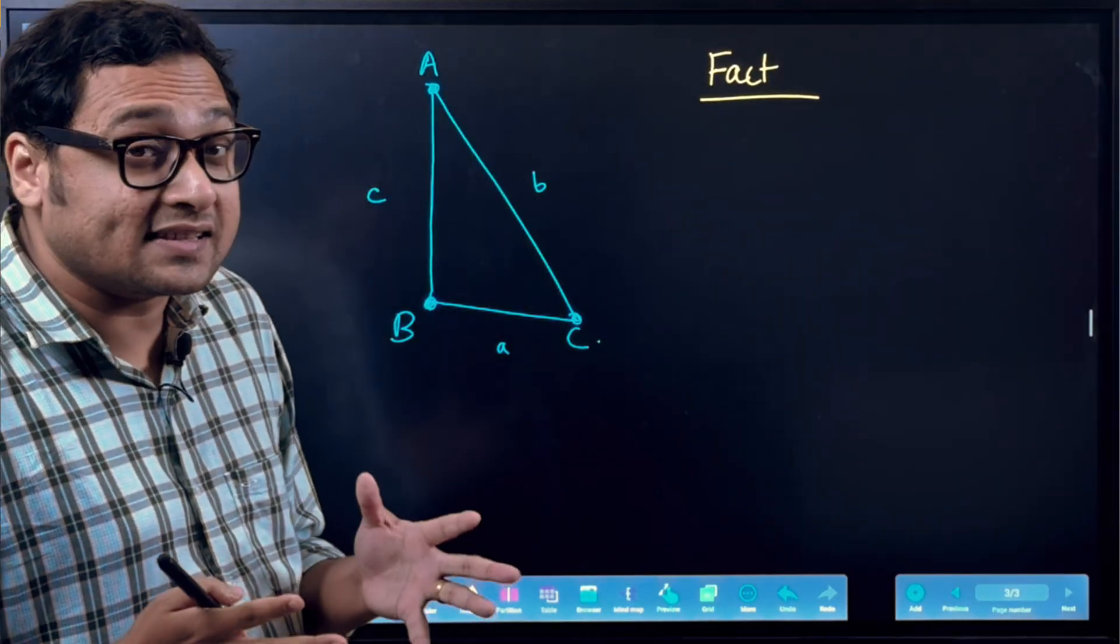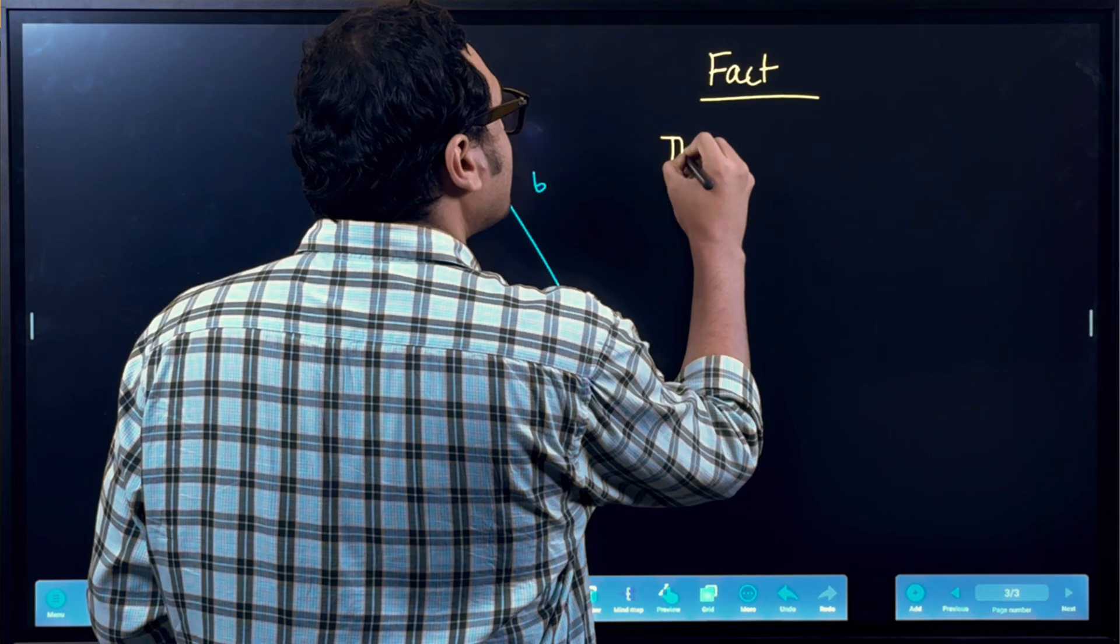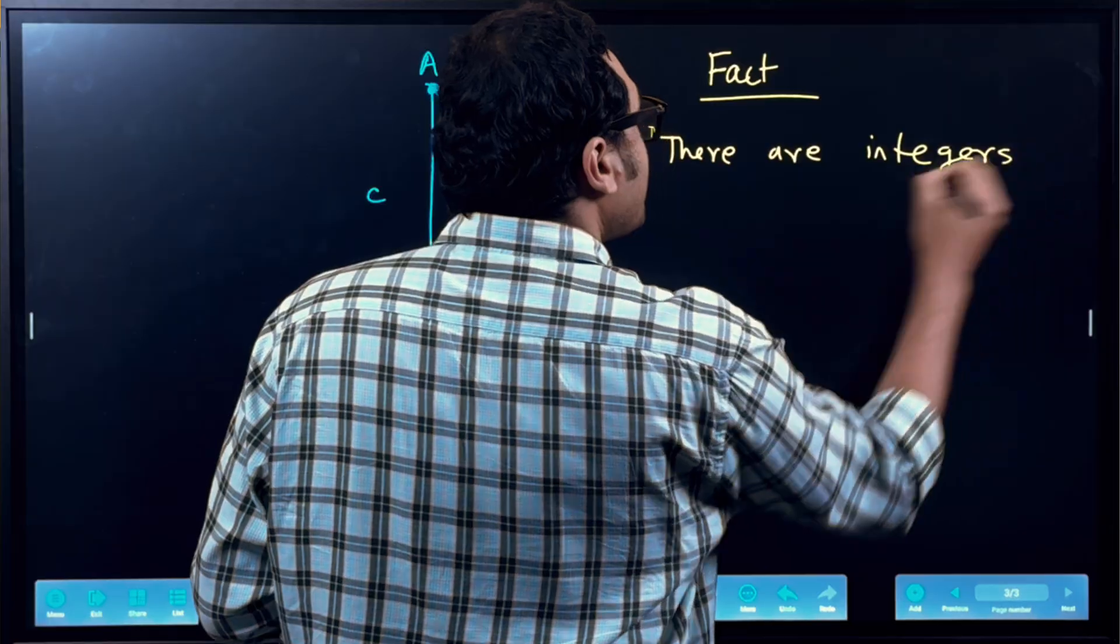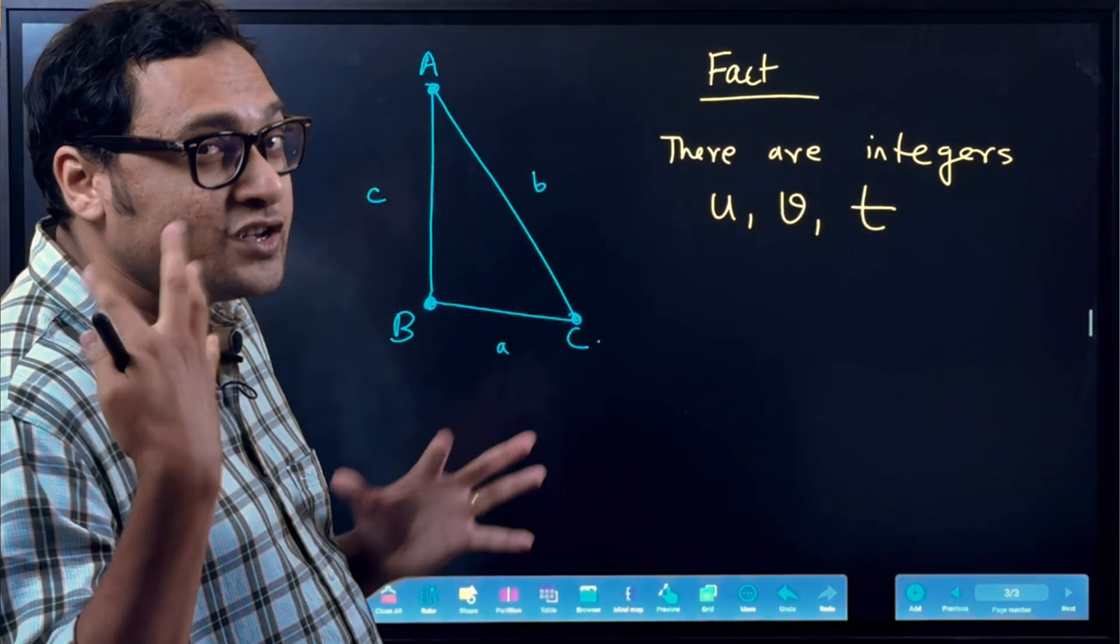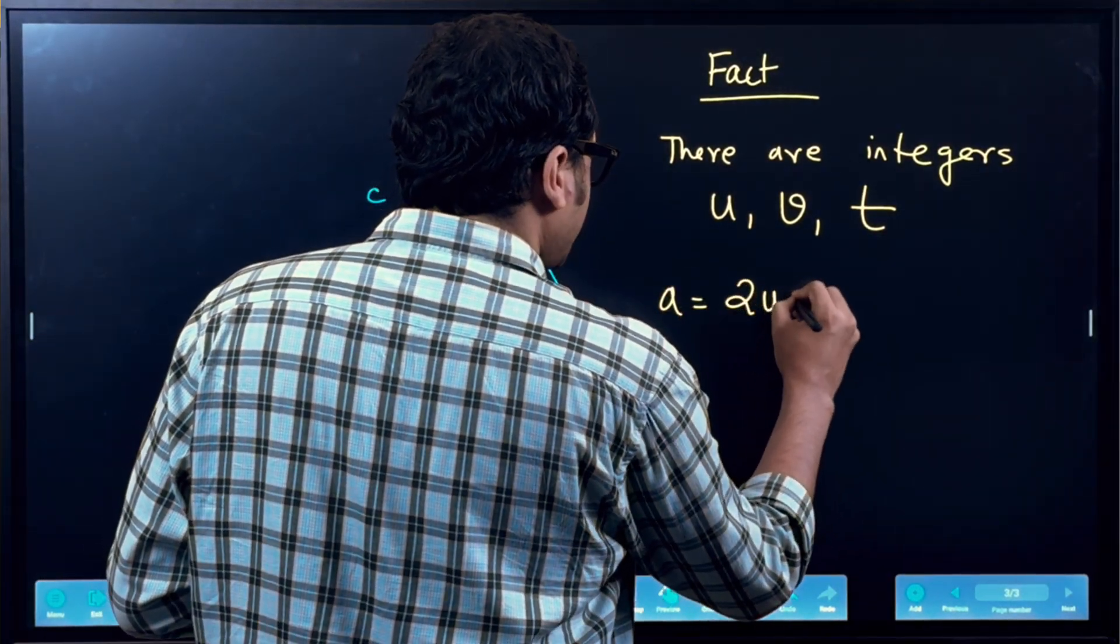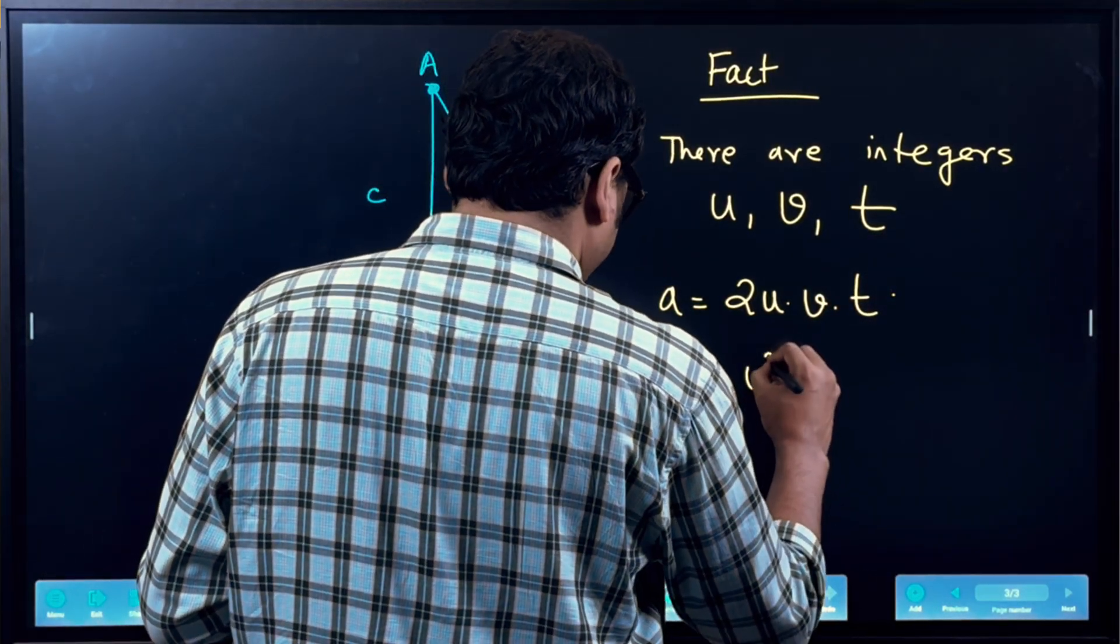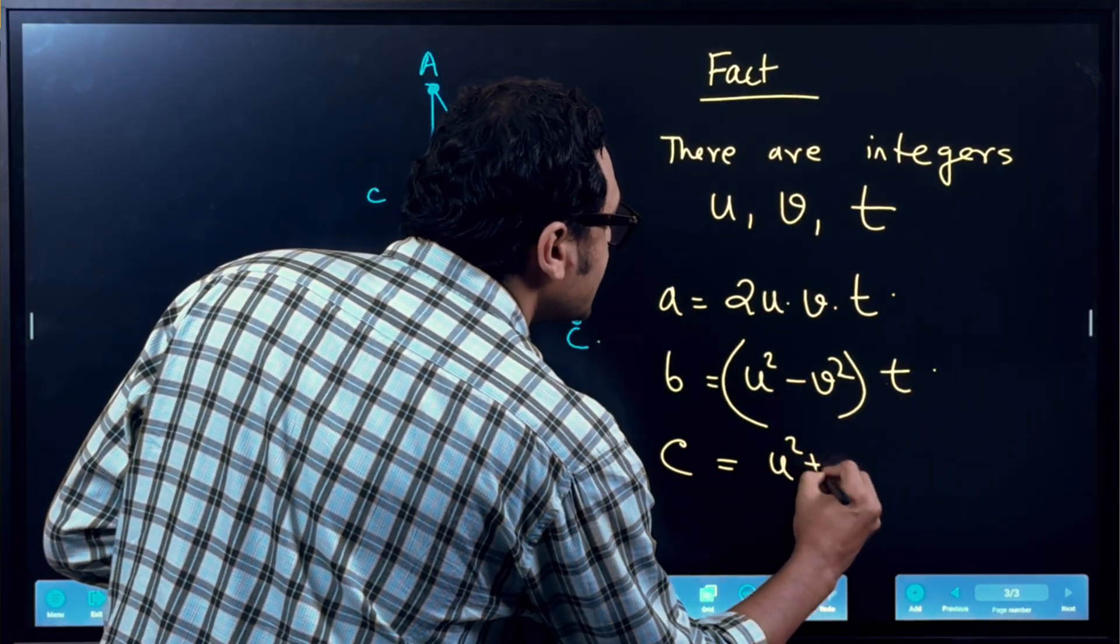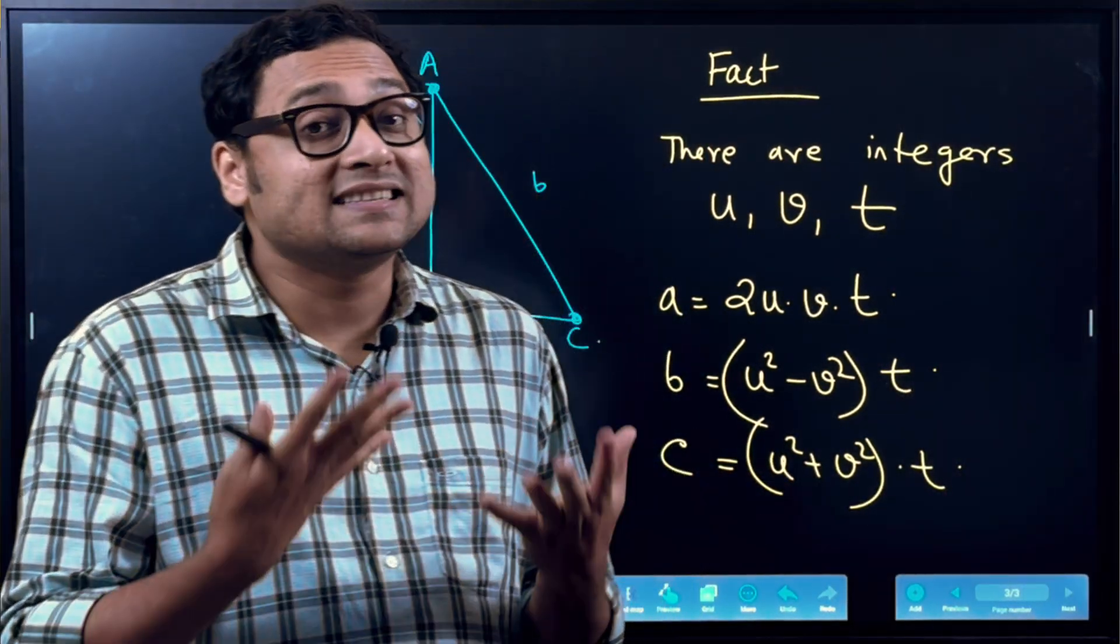Here is the fact. And one can prove this, and the proof is really interesting. The fact is that there are integers U, V, and T. There are three integers U, V, and T, such that A equals to 2U times V times T. B equals to U square minus V square times T. And C is equal to U square plus V square times T.